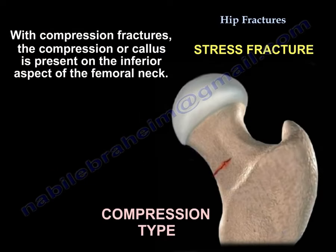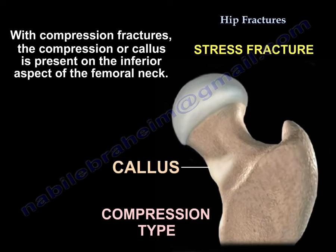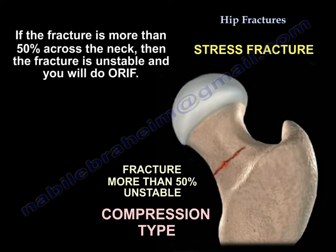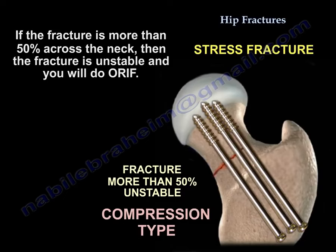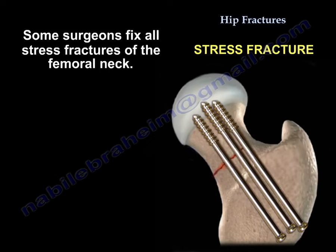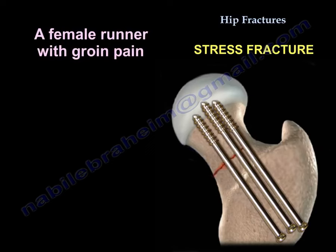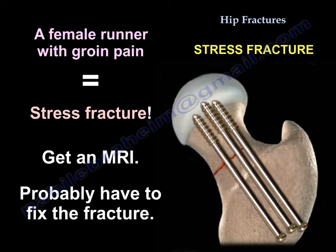In compression fractures, the fracture or callus is present on the inferior aspect of the femoral neck. If the fracture is less than 50% across the neck, it may be stable and protected crutch ambulation can be used. If the fracture is more than 50% across the neck, it is unstable and ORIF is indicated. Some surgeons fix all stress fractures of the femoral neck. In a male runner with groin pain from a stress fracture, get an MRI and you will likely need to fix the fracture.